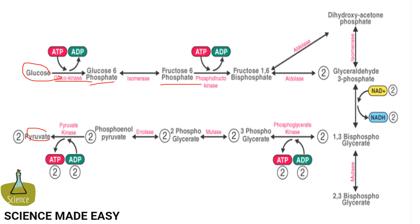In the third step, fructose 6-phosphate is converted into fructose 1,6-bisphosphate by the action of the enzyme phosphofructokinase. Then, fructose 1,6-bisphosphate is converted into glyceraldehyde 3-phosphate and dihydroxyacetone phosphate, which are isomers of each other.